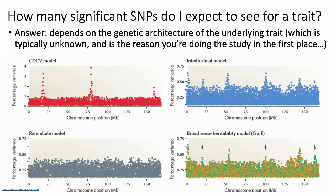In the infinitesimal model, there are a large number of common variants that collectively explain some proportion of variance in the complex phenotype. In this model, you might actually see some small peaks corresponding to small effects of common variants. The infinitesimal model looks conceptually similar to the rare allele model, but those small peaks arise because common variants shared across potentially multiple individuals still provide some measurable explanation of phenotypic variance.